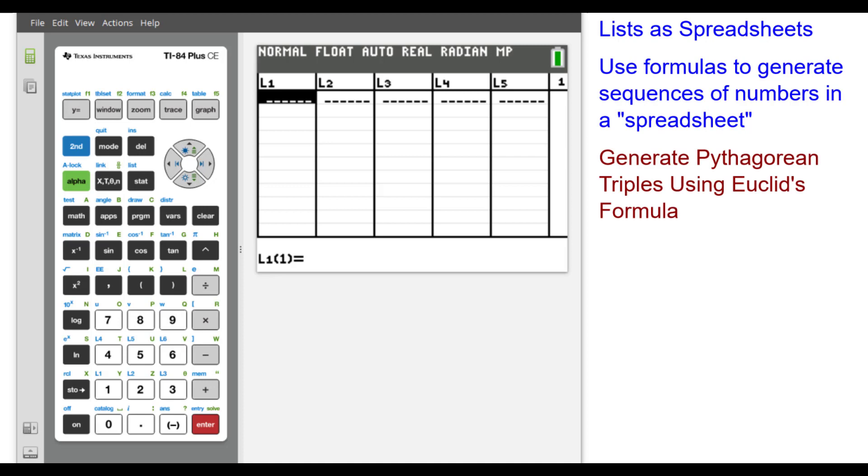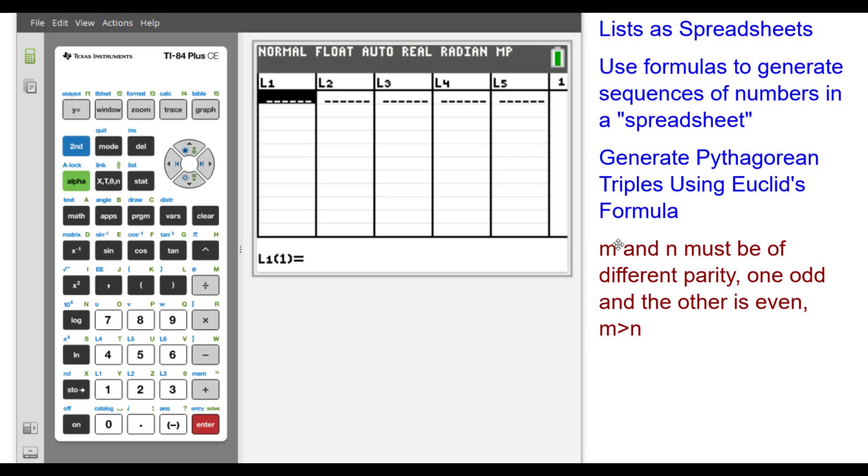We will generate Pythagorean triples using what's called Euclid's formula. So the variables we're going to use, M and N, must be of different parity. That is, one is odd and the other is even, and M is greater than N. And these are the three formulas that generate the three triples.